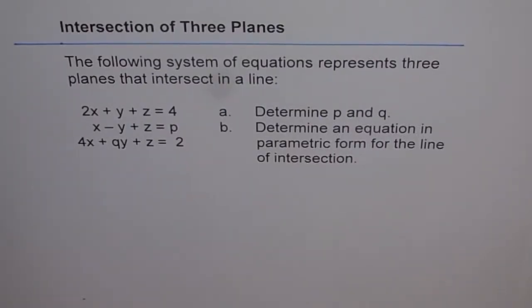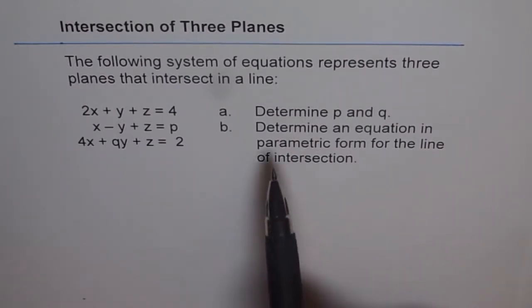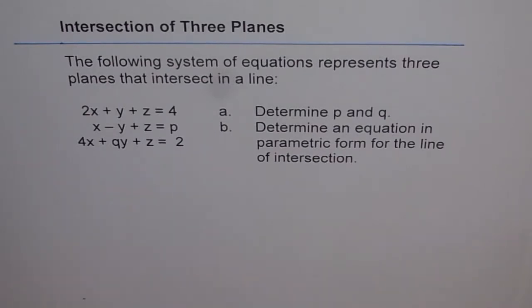Intersection of three planes. The following system of equations represents three planes that intersect in a line: 2x plus y plus z equals 4, x minus y plus z equals p, 4x plus qy plus z equals 2. You need to determine p and q for them to intersect in a line. The second part is to determine an equation in parametric form for the line of intersection.